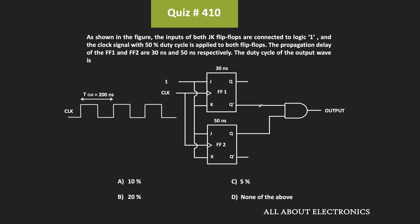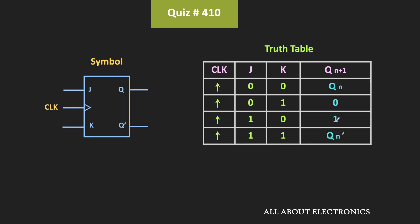The output of these two flip-flops are given to the AND gate, and we have been asked to find the duty cycle of this output waveform. To find the output waveform, first of all we should know how this JK flip-flop behaves. When both inputs of the JK flip-flop are 1, then its output will toggle.